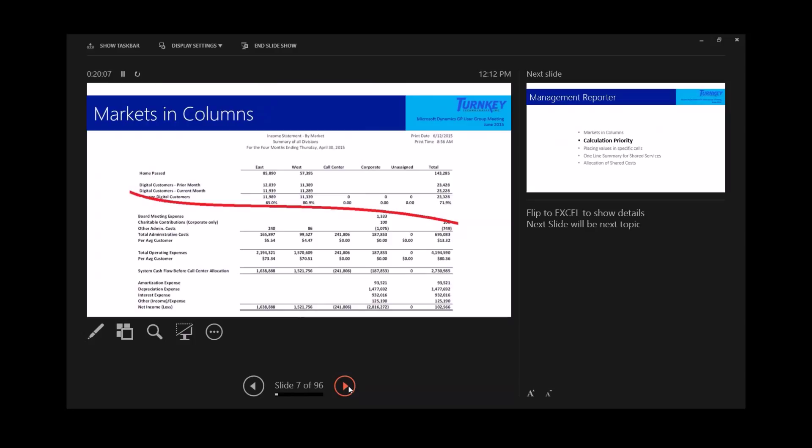So here's what it looks like. Here's how it's set up. You've got C&HOD, West, call center, corporate, unassigned, total. They're using this in the accounting department really as a surveillance report to help them make sure everything's on track. They start with statistical accounts at the top of the report, then they get into revenues and expenses.